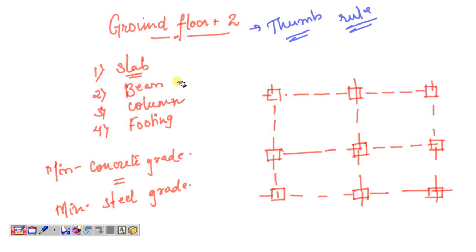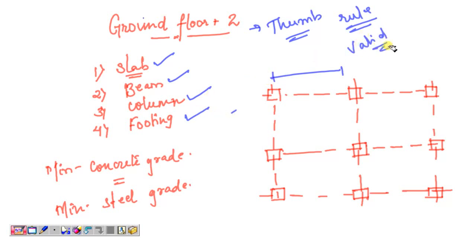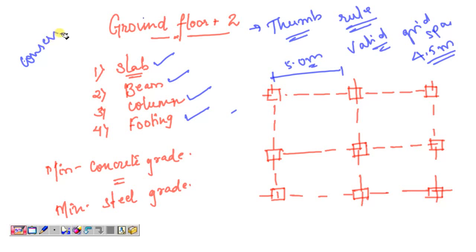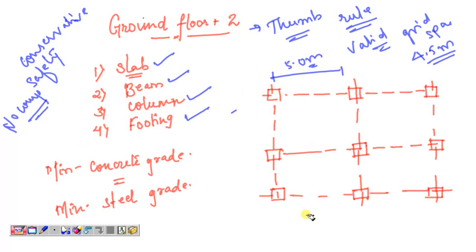In a building design we have slab design, beam design, column design, and footing design. This design is valid for a grid spacing of maximum 5 meters — better to keep it at 4.5 meters. The design will be a bit conservative because we don't want to compromise on safety. If you want an optimized design you need to seek advice from a structural consultant. For thumb rule design of your own house, I suggest going with this conservative approach.